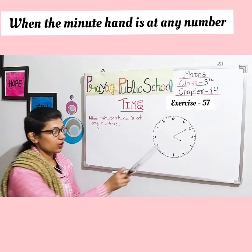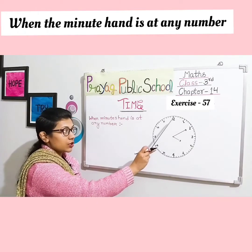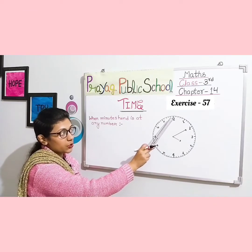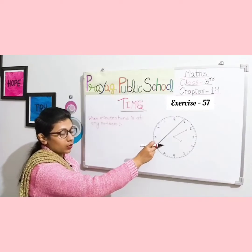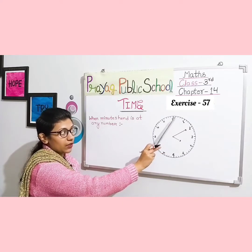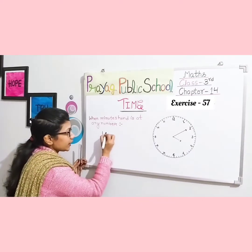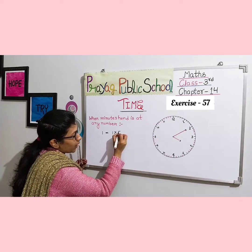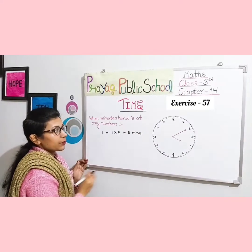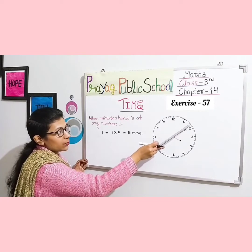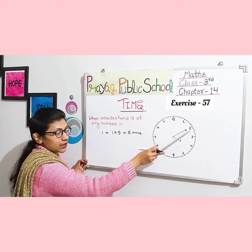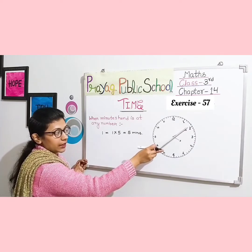Now look at this clock. The minute hand is at 2. When the minute hand moves from 12 to 1, it covers five small divisions — that means 5 minutes are complete. When the minute hand is at 1, it means 5 minutes. Now from 1 to 2, again five minutes are completed. From 12, the minute hand is at 2, covering 10 small divisions, which means 10 minutes.